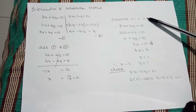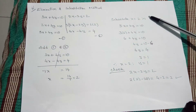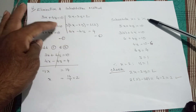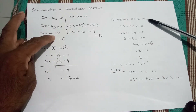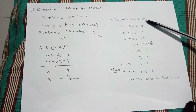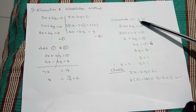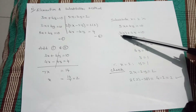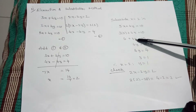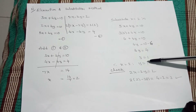We got x equal to 2. Now select any of the equations. We have two equations, but I selected 3x plus 4y equal to 10 and substitute x equal to 2. Therefore, 3 times 2 plus 4y equals 10, that is 6 plus 4y equals 10. So 4y equals 10 minus 6, and 4y equals 4, giving y equal to 1.